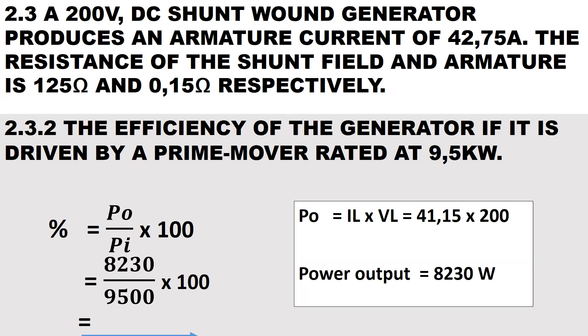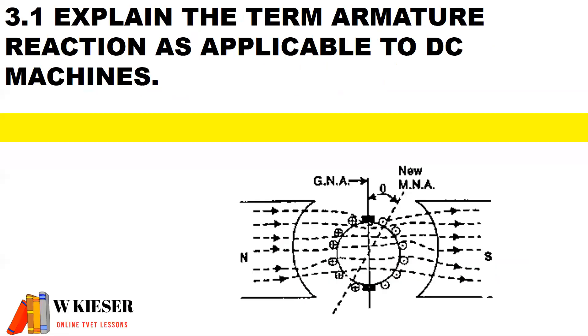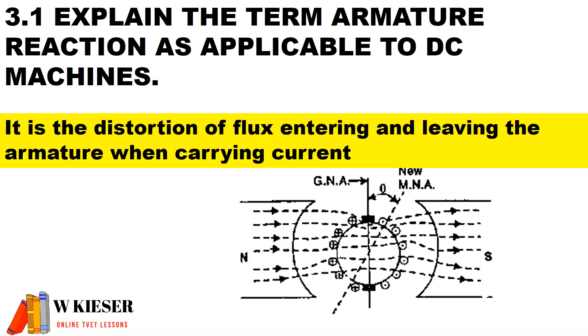To determine the efficiency, it is output power divided by input power multiplied by 100. Therefore this generator is operating at an efficiency of 86.63%. Armature reaction, as applicable to DC machines, is the distortion of flux entering and leaving the armature when the armature conductors carry current. The axis also shifts from the geometric neutral axis to the magnetic neutral axis.